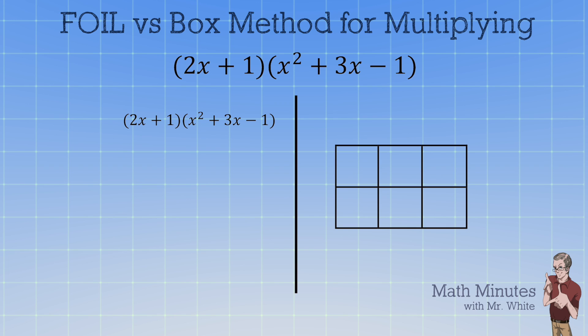So on the left side, we're going to take 2x times x² and we get 2x³. Then I'm going to take 2x times 3x and that's 6x². And then I'm going to take 2x times -1. So I'm doing three multiplication problems right here in a row to get all those down.